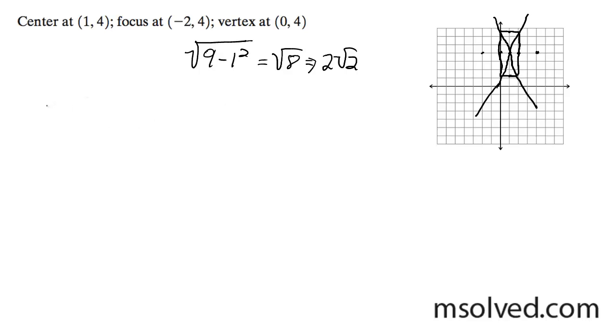So I'll just go ahead and graph this equation. It's going to open up left to right, so that means the x is going to be first. So it's going to be x minus 1 squared, because it's moving to the right one for the center.